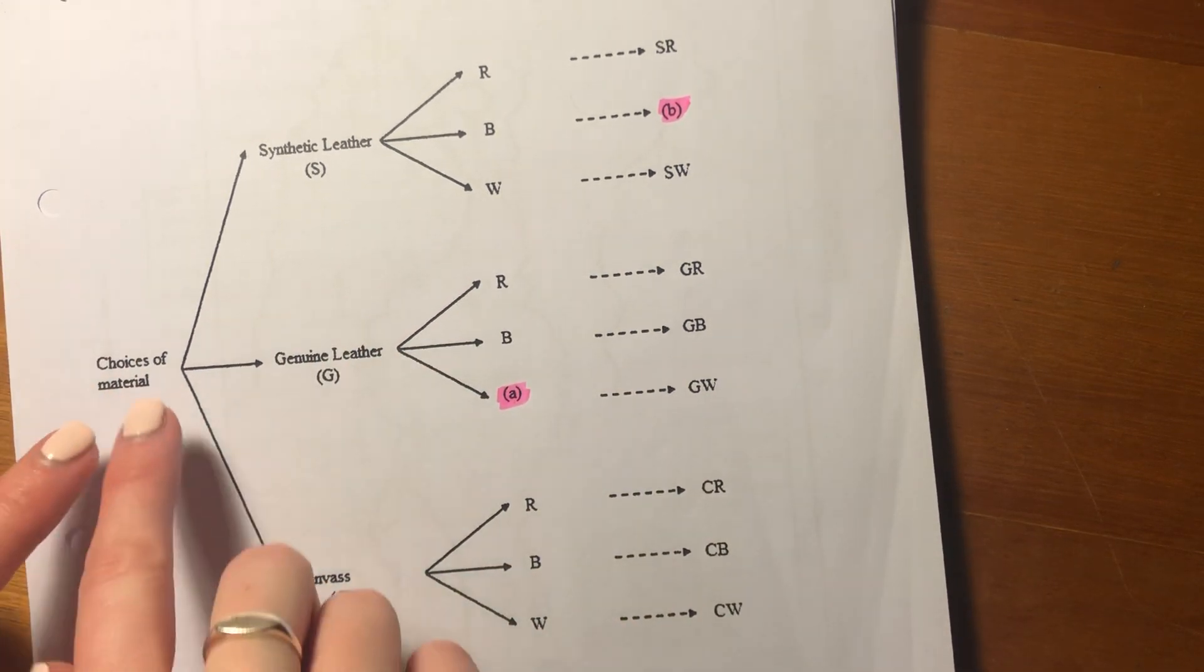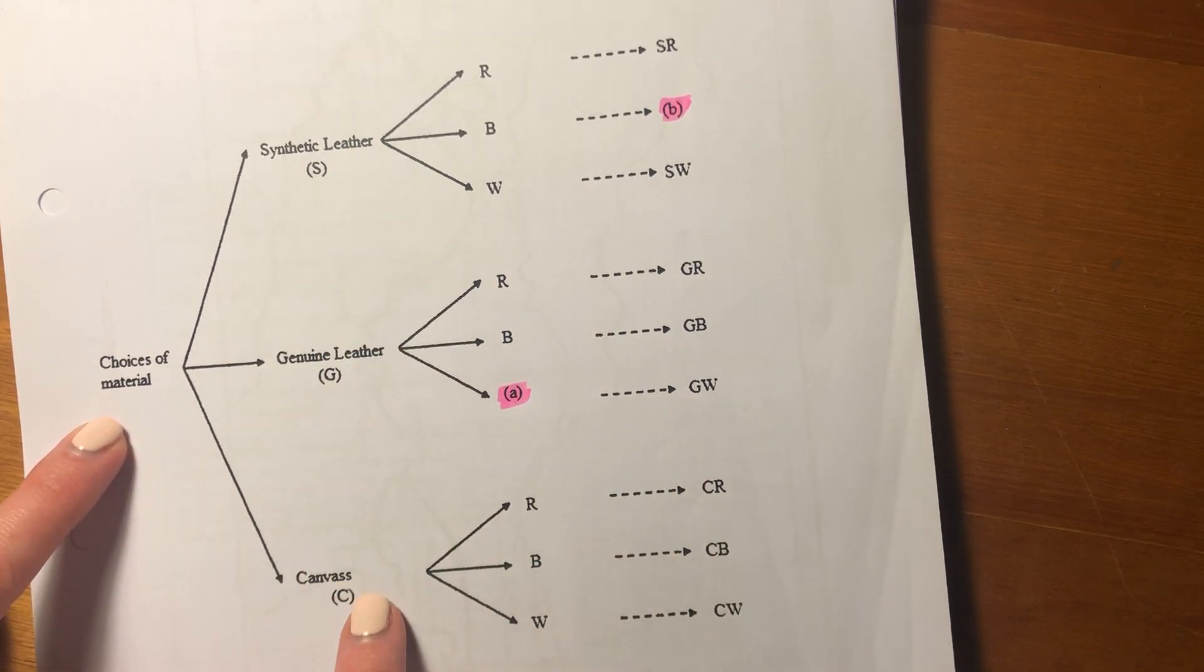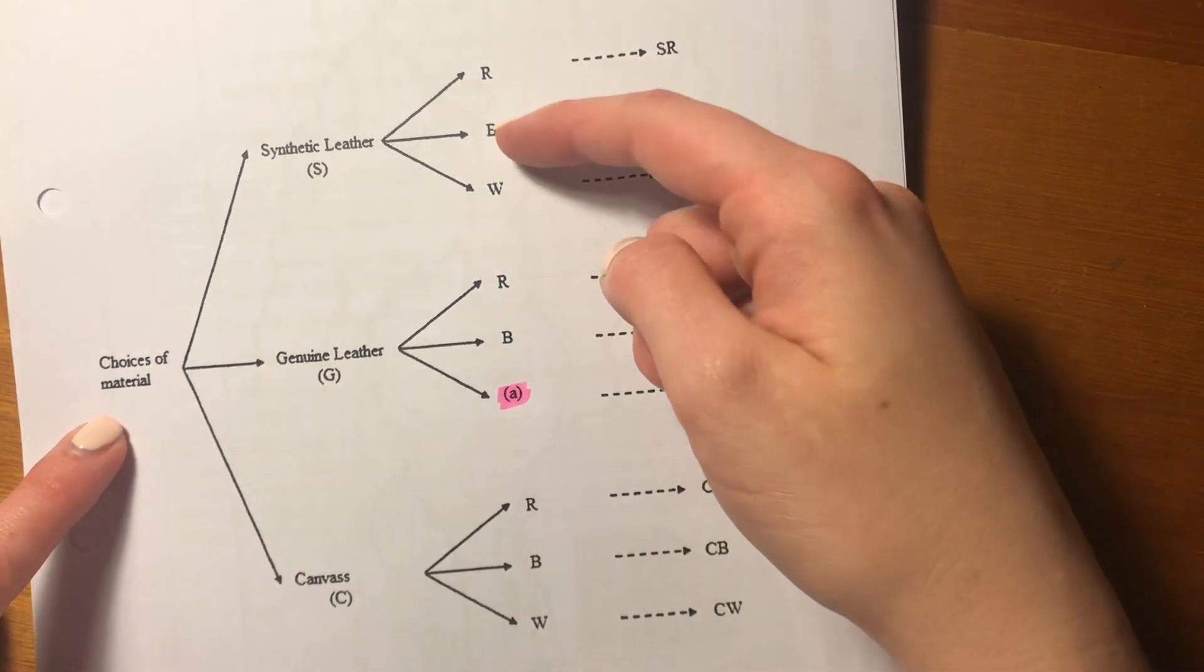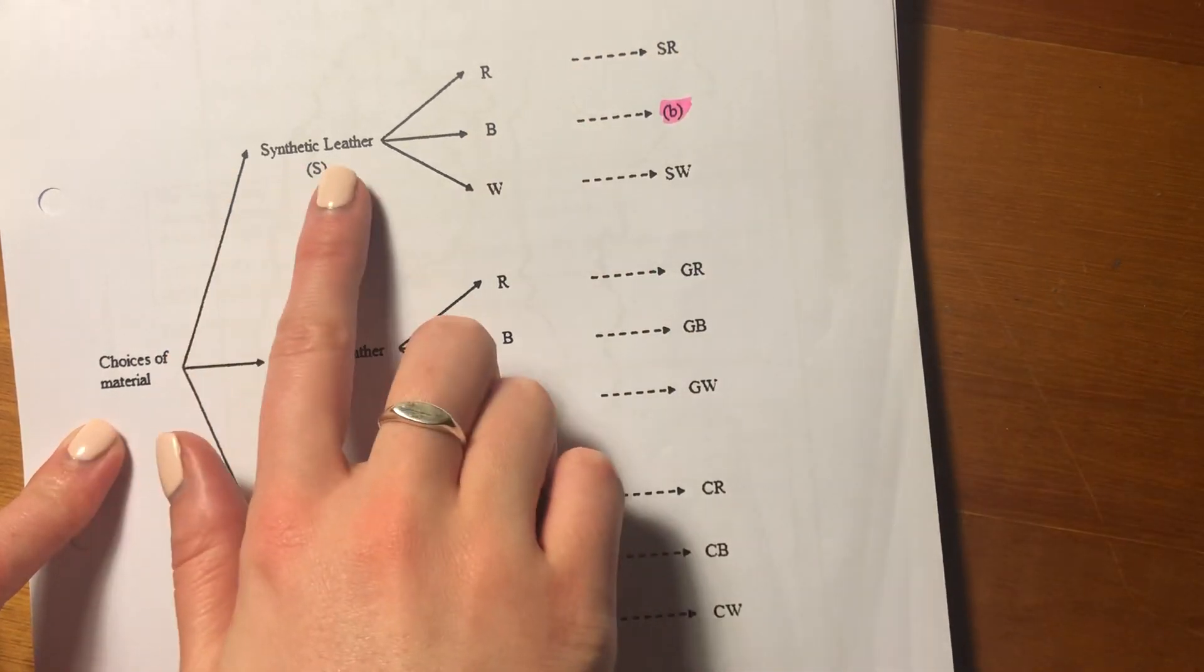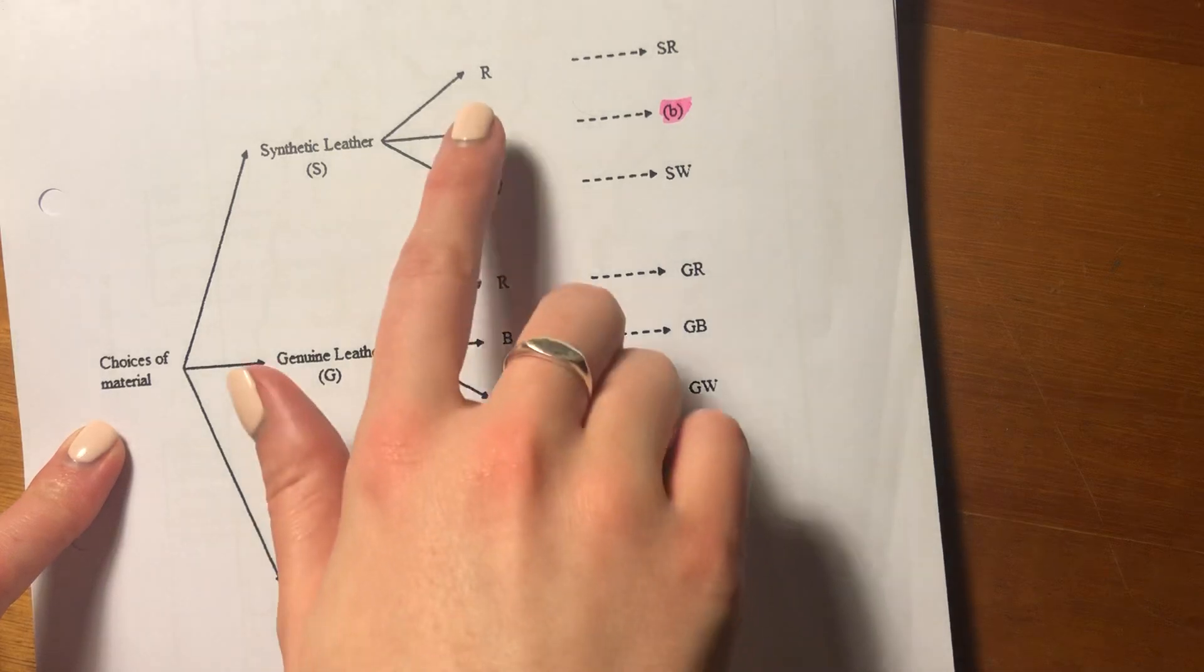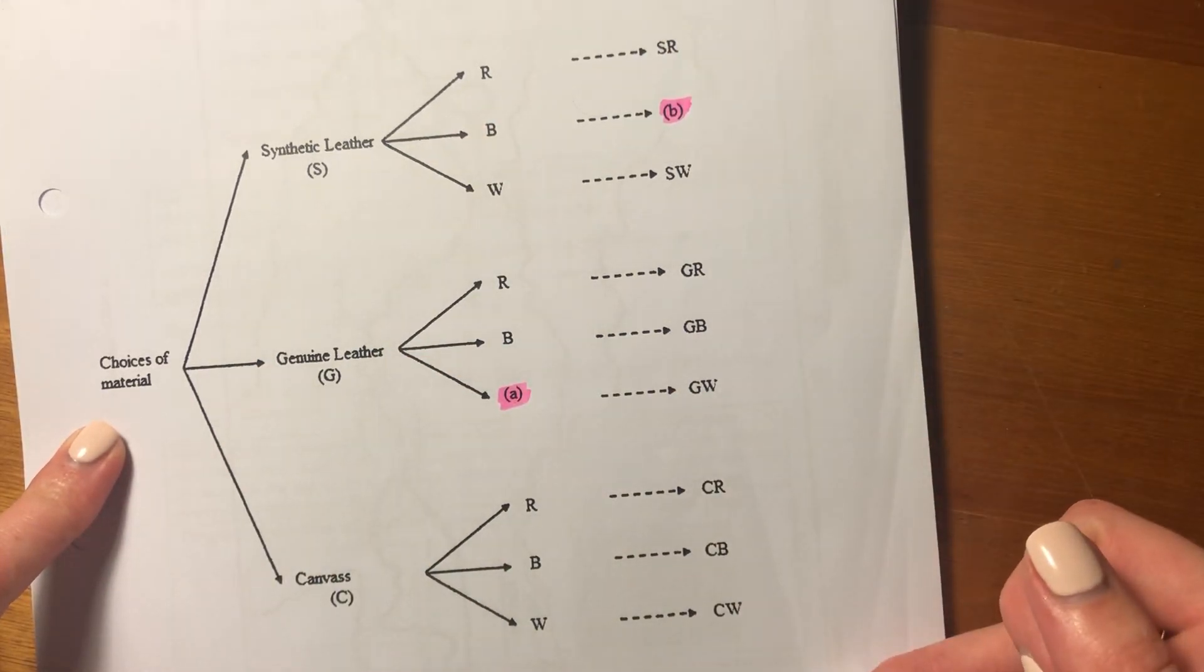So we can see here his choice of material: he can either have synthetic leather, genuine leather, or canvas. And then RBW stands for red, blue, white, which are the colors. So for each of the different types of material, there are three different colors. So you should see that there are nine options.